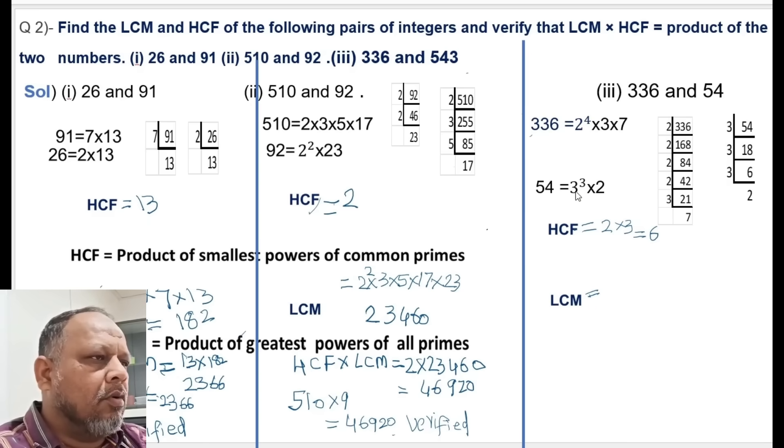For LCM, we have to take the greater powers: 2 power 4 multiplied by 3 cube multiplied by 7. This is equals to 2 power 4 is 16, 16 into 27 into 7 equals 3,024.